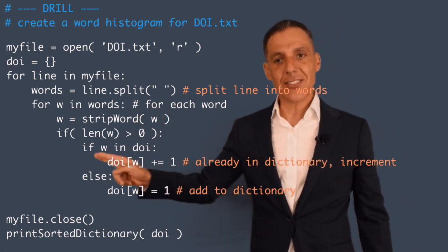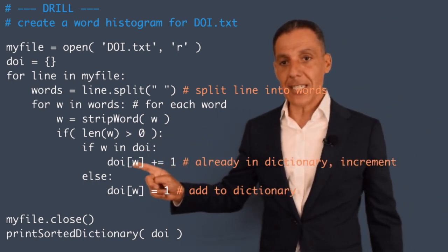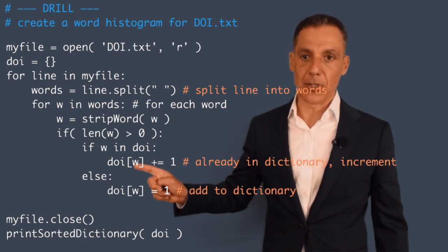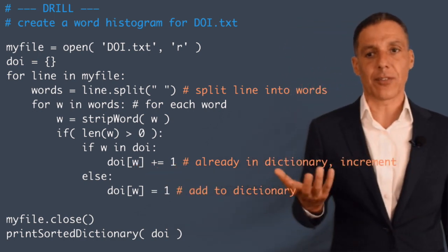I'm asking, is the key in the dictionary? If it is, well then I'm going to index into the dictionary on W and I'm going to increment the count by one, because I've just found a new instance of the word.